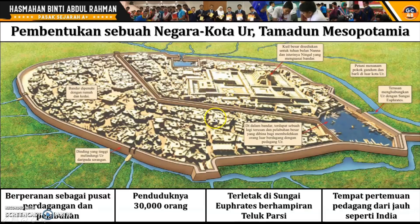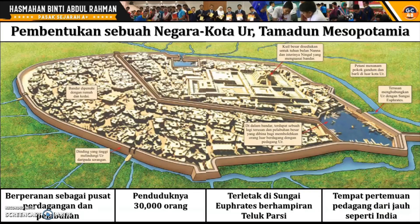Ciri negara kota Ur ialah ia berperanan sebagai pusat perdagangan dan pelabuhan dengan penduduk lebih kurang 30,000 orang. Ia terletak di Sungai Euphrates yang berhampiran dengan Teluk Parsi dan menjadi tempat pertemuan pedagang dari jauh seperti dari India. Dengan itu, kita selesai mengenai Tamadun Mesopotamia.